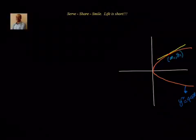So the first thing we can write down is y squared equal to 4ax, and at the particular point x1, y1: y1 squared equal to 4ax1, because the point x1, y1 should satisfy both the line and the parabola — it is a common point to both.